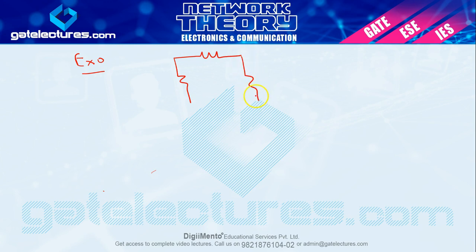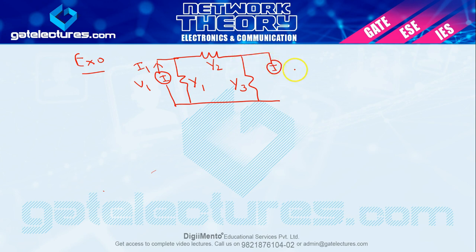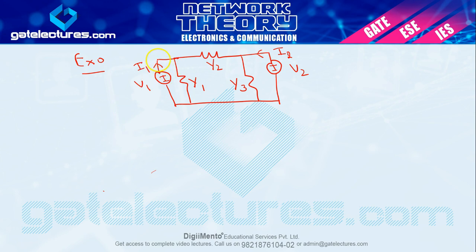Consider a pi network with admittances Y1, Y2, and Y3. Apply supply V1 with current I1 at port 1 and V2 with current I2 at port 2. Just as we applied KVL for the T network when studying Z parameters, here we apply KCL for the pi network because Y parameter equations are KCL equations. Using nodal analysis: voltage at the left node is V1, at the right node is V2, and the bottom is the ground node.